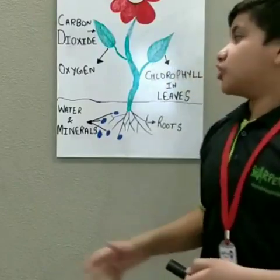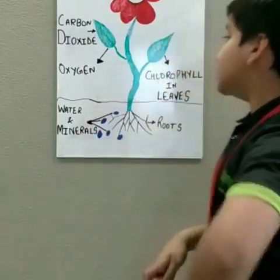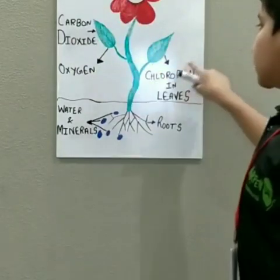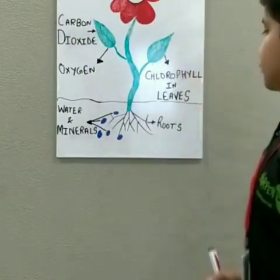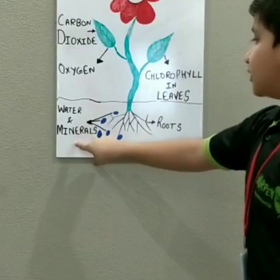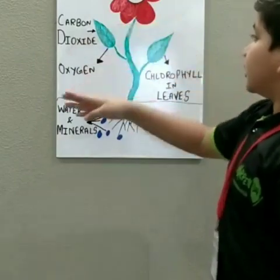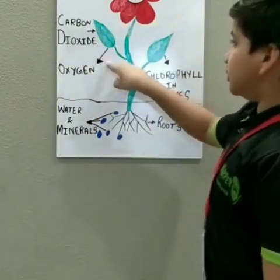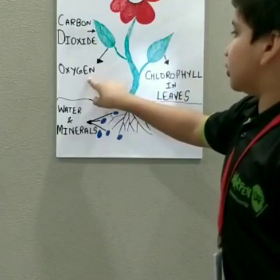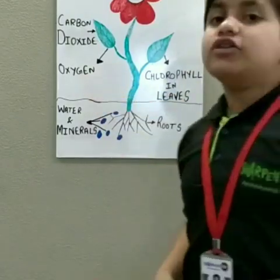Now this is how the process of photosynthesis takes place. You can see sunlight falls on the leaves, chlorophyll is present in the leaves, these are the roots, water and minerals are present in the soil, carbon dioxide gets entered into the leaves and after the process it gives out oxygen and then we also get glucose.